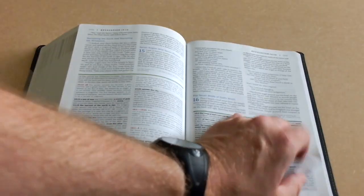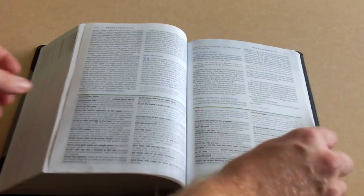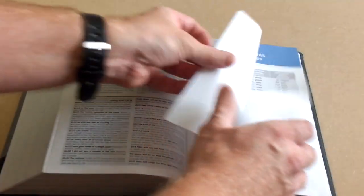You've got your concordance in the back. Usual sort of tables of weights and measures and things like that.